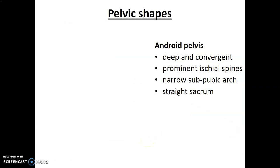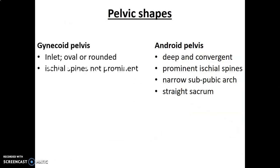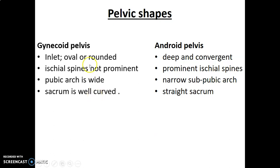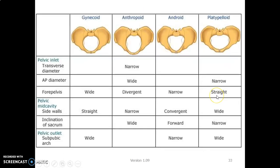There are different types of pelvic shapes: the gynecoid, android, anthropoid, and platypelloid pelvis. The gynecoid pelvis is adequate for obstetrics — oval and rounded with non-prominent ischial spines, a wide pubic arc, and a well-curved sacrum. The android pelvis, seen in men, is deep with prominent ischial spines, a narrow pubic arc, and a straight sacrum. The pelvic inlet shape varies: the android is narrow and heart-shaped while the gynecoid is round or oval, wider and shallower.